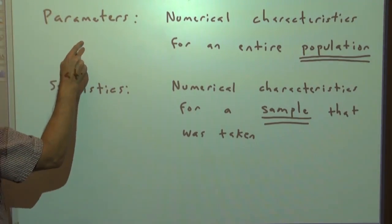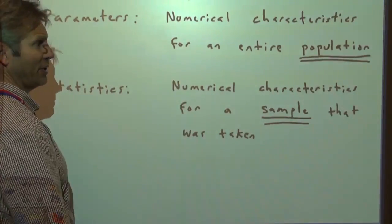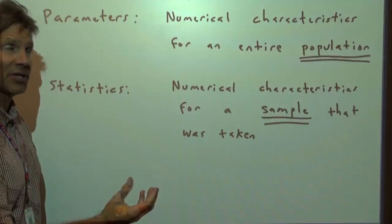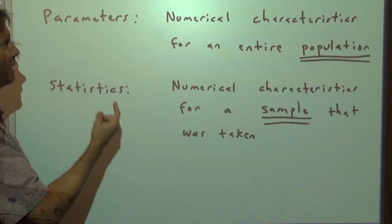Here's the definition. A parameter is a numerical characteristic for an entire population. If it is the mean of an entire population, it is a population mean and it is a parameter.